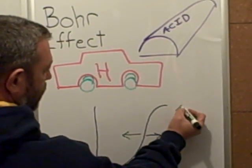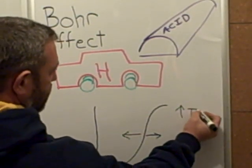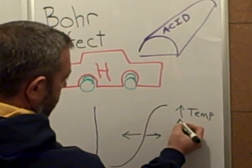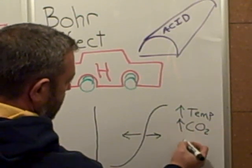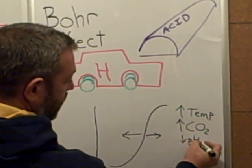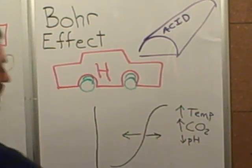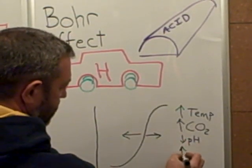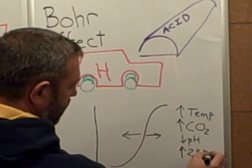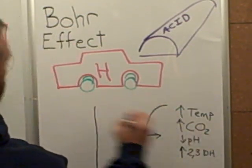you can have an increase in temperature, an increase in CO2, a decrease in pH which is basically an increase in acid levels, and an increase in 2,3-DPG.